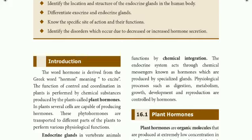The word hormone is derived from the Greek word 'hormone.' The function of control and coordination in a plant is performed by chemical substances produced by the plants. These chemical substances are plant hormones. For example, one tree produces ripening fruits — the hormone is involved in the process of fruit ripening in plants.